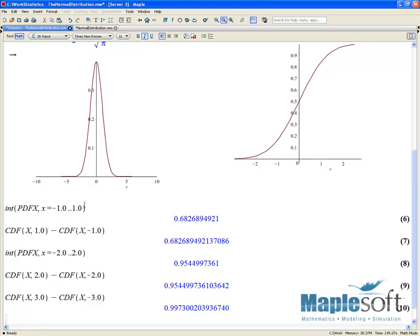So again, this is a way we can verify that this three sigma rule, which states that nearly all the values, 99.7% of the values, lie within three standard deviations of the mean in a normal distribution.